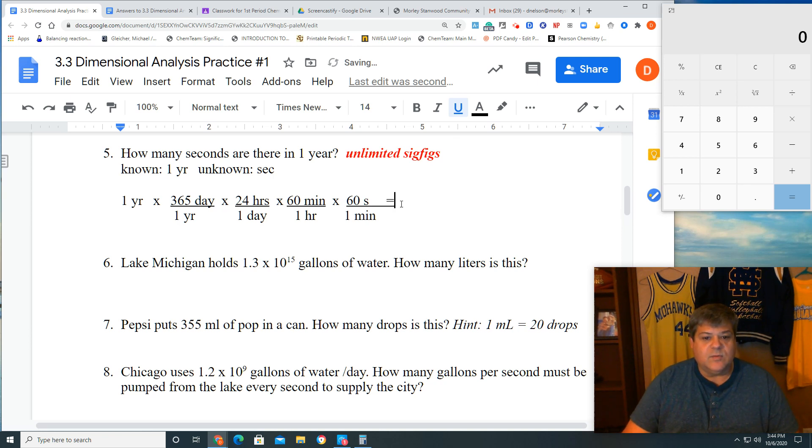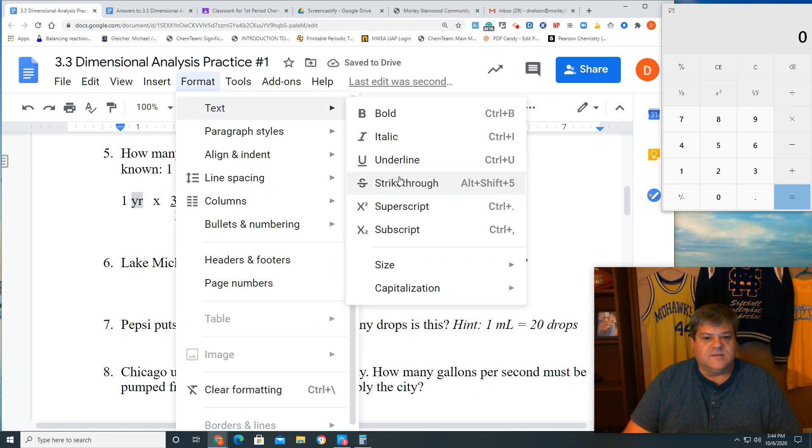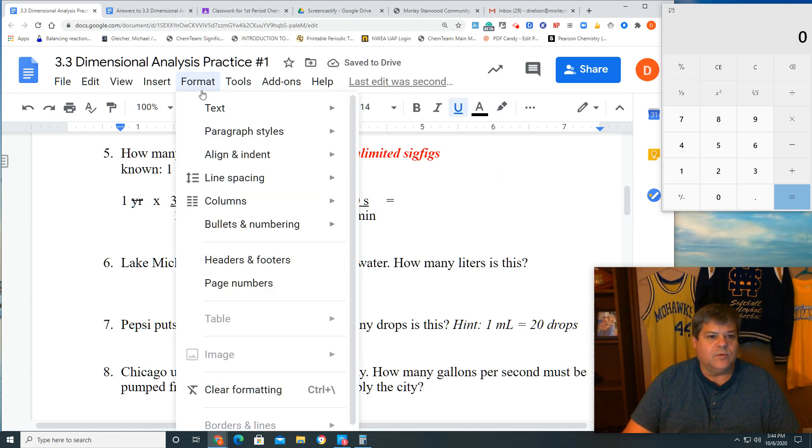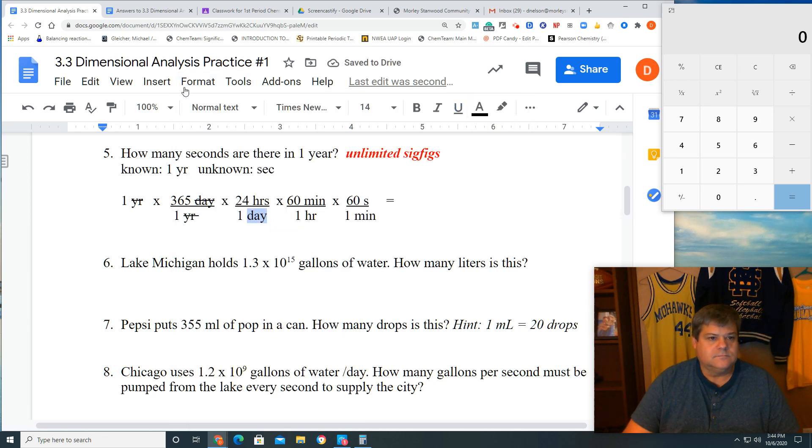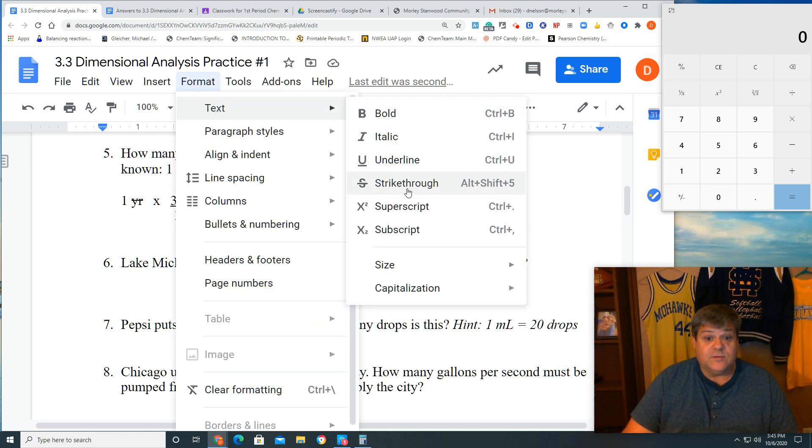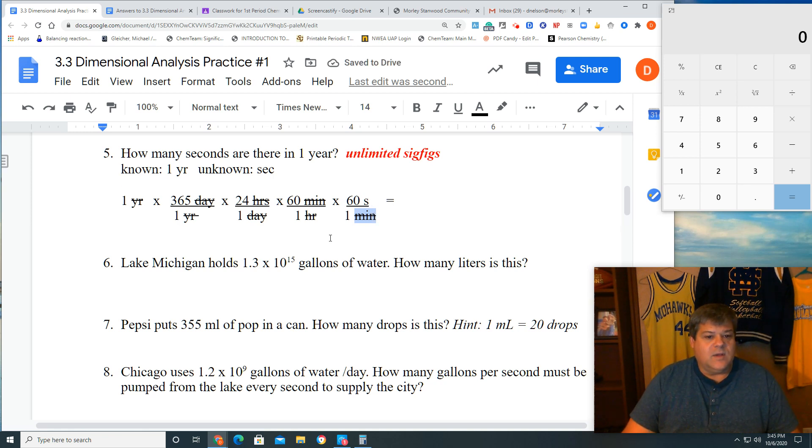Now we look at what it is. Can we get rid of anything? Yep, we can get rid of all of our units except for the seconds. We're going to strike through that year on top. Day on top and day on bottom, we're going to get rid of those. Hours on top and hours on bottom. Everything goes: minute, hour, day, year. We're left with seconds. So we're basically done.